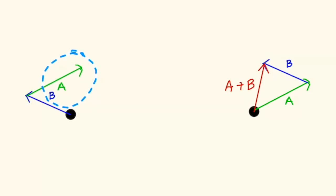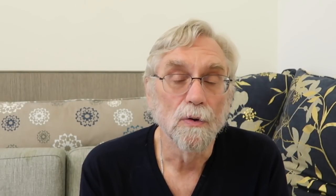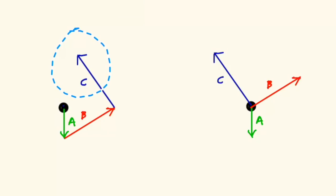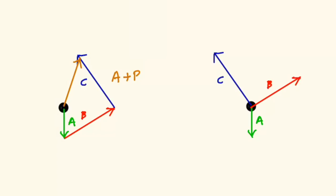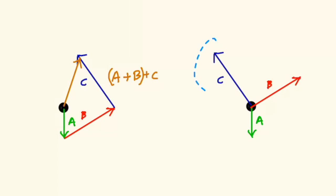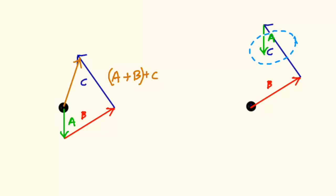Notice that it doesn't matter which order we do that in — if we walked the second vector first and the first vector second we'd come up with something that has exactly the same direction and magnitude. Getting fancy, we'll say that vector addition is commutative: you can do addition in any order. We can add even more vectors applying the same placement procedure: put the base at the arrowhead of where you last stopped. Vector addition is also associative, which means when adding more than two vectors the order in which you do the addition doesn't matter.